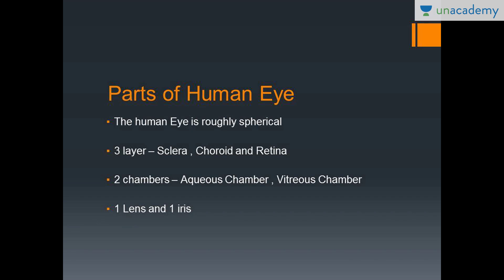Moving on without wasting any time, the human eye is a roughly spherical organ. It is present in the orbits and we have three layers that make up the eye: the sclera, the choroid, and the retina. The human eye has three layers, two chambers — the aqueous chamber and the vitreous chamber — a single lens, and a single iris.